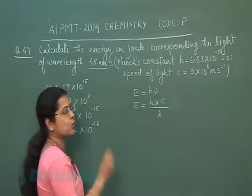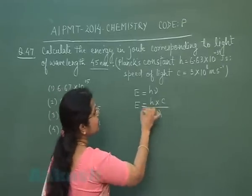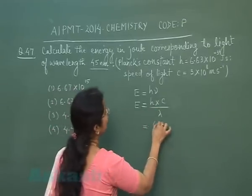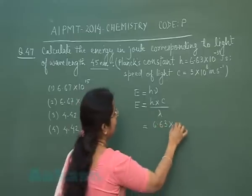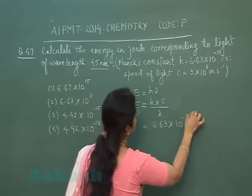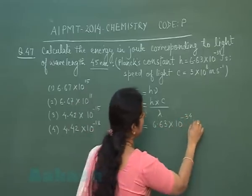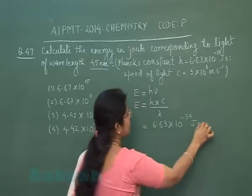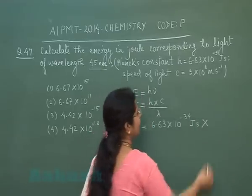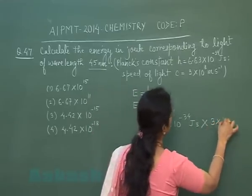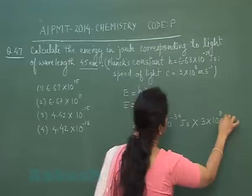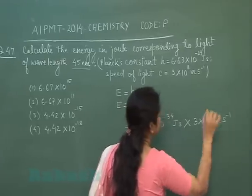In this question, h is given as Planck's constant: 6.63×10⁻³⁴ joule-second. c is the speed of light, which is 3×10⁸ meters per second.